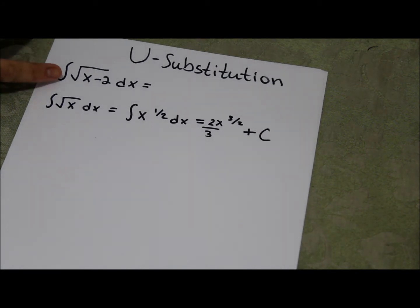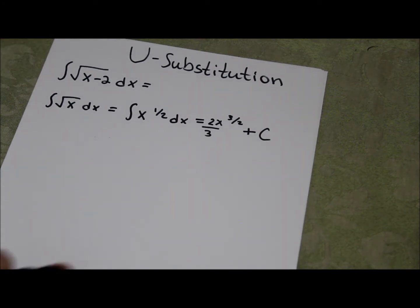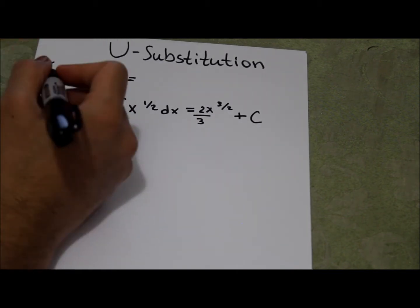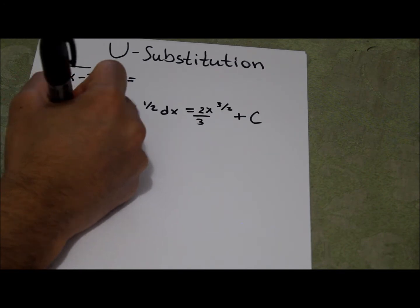But if you look here we have x minus 2 inside the radical. We can't just disregard the x minus 2. So what we do is use u-substitution.